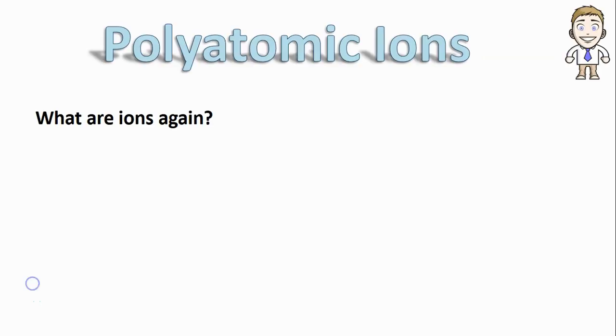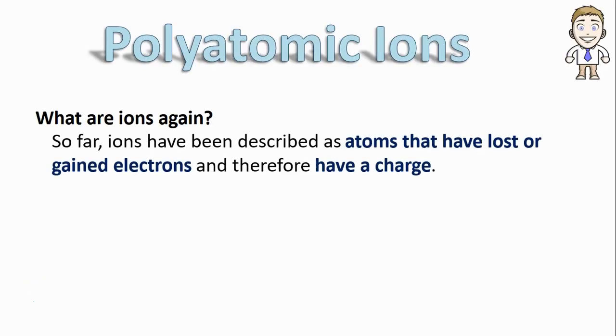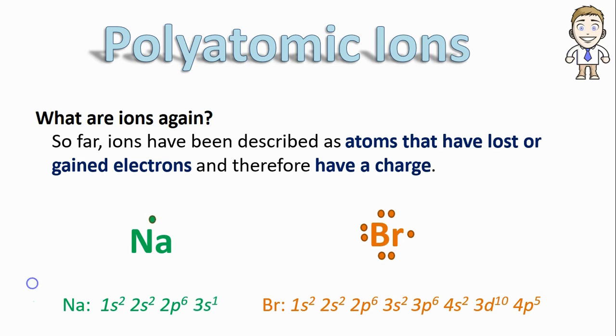Let's first remind ourselves what ions actually are again. We've been describing them so far as atoms that have lost or gained electrons and therefore have a charge, like sodium and bromine, where an electron transfers and sodium gets a plus one charge. Now it's considered a sodium ion, and the bromine gets a negative one charge, now it's considered a bromine ion.